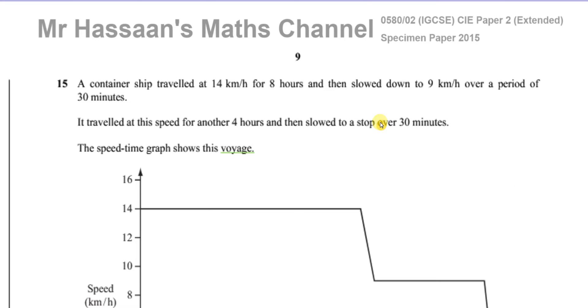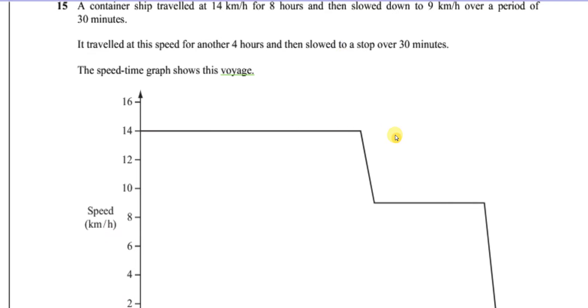This question is about travel graphs, and we're told that a container ship travelled at 14 km per hour for 8 hours, and then slowed to 9 km per hour over a period of 30 minutes. It travelled at this speed for another 4 hours, and then slowed to a stop over 30 minutes. The speed time graph shows this voyage.